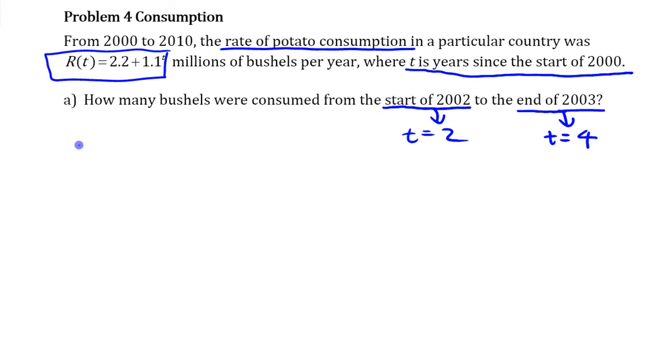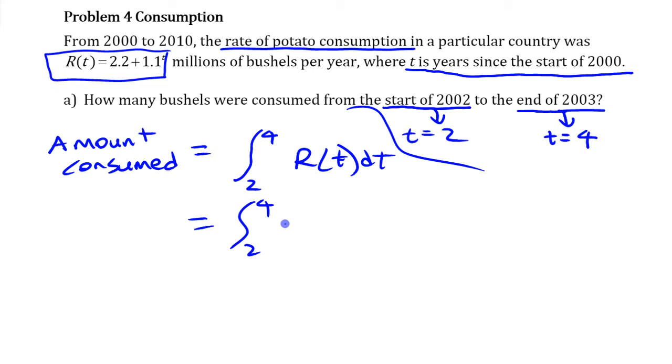So we're going to determine this net change in the amount consumed, or the consumption, the amount consumed over that two-year period. This is going to be the integral from year 2 to year 4 of that r(t) dt. You could write it out with the actual function, 2.2 plus 1.1^t, or you can use that function notation.